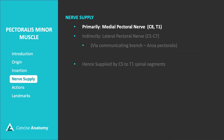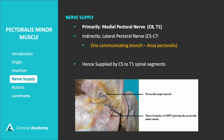The pectoralis minor is primarily supplied by the medial pectoral nerve, and indirectly by the lateral pectoral nerve, through a communicating branch known as the ansa pectoralis. Together, these nerves cover spinal segments C5 to T1. The medial pectoral nerve pierces through the pectoralis minor muscle to supply the overlying pectoralis major, as displayed in the dissection.